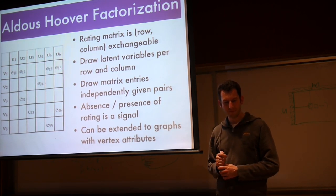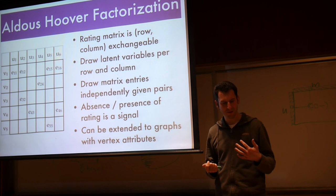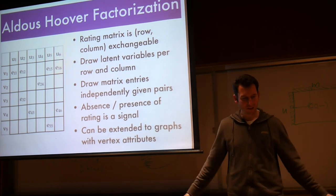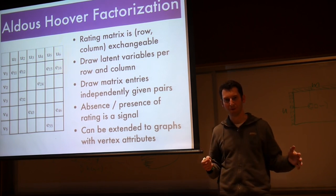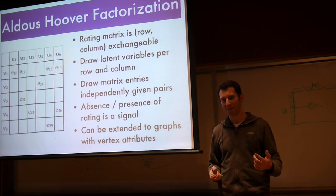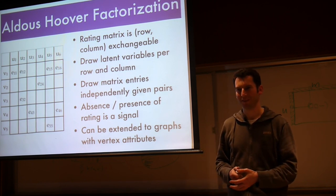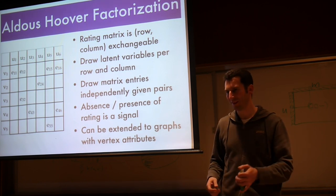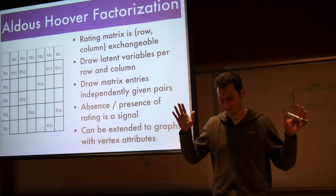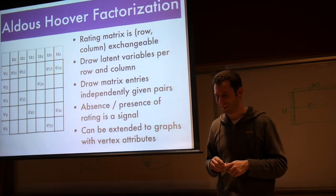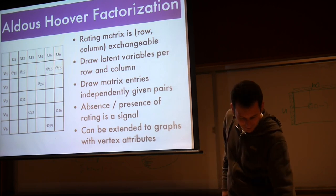That can only happen if this dependency structure here is a very special form, and then you can essentially show that the corresponding model works if I have vertex attributes for users and movies. So that's a little bit hand-wavy, but that's basically the argument that you do. Basically, what you do is you assume that the rating matrix is row or column exchangeable. You draw the latent variables per row or column, and then we go and pick the matrix entries independent. And whether we actually observe a rating is now not a nuisance, but it's actually a signal.